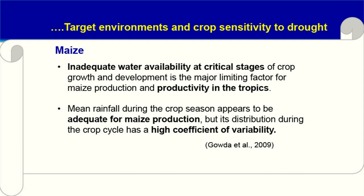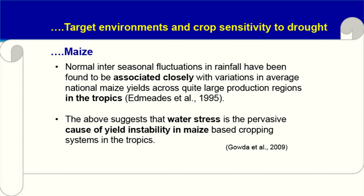For maize, inadequate water availability at critical stages of crop growth and development is the major limiting factor for production and productivity in the tropics. The silking stage is very important for moisture. Mean rainfall during the crop season appears adequate for maize production, but its distribution has a high coefficient of variability. Normal inter-seasonal fluctuations in rainfall are closely associated with variations in average national maize yields across large production regions in the tropics, confirming that water stress is the pervasive cause of yield instability in maize-based cropping systems.